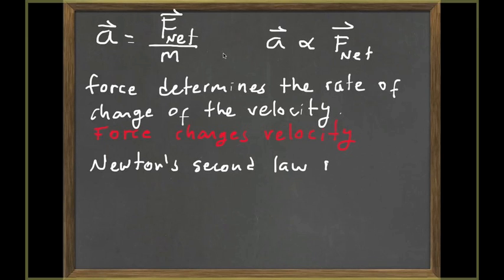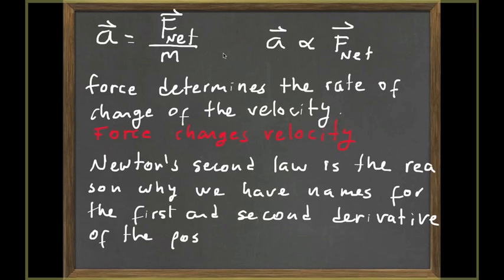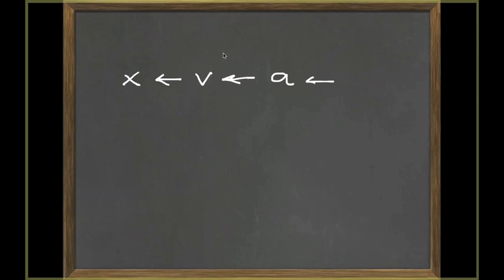Newton's second law is the reason why we gave names for the first and second derivative. In kinematics, as you remember, the first derivative is velocity and the second derivative is acceleration. But we didn't give any names to the third derivative, fourth derivative, and so on. Why weren't they important? The answer to this question is given by Newton's second law.